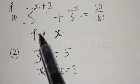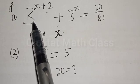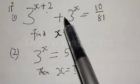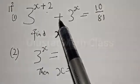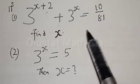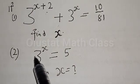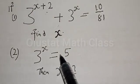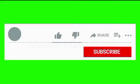Hi everyone, welcome to my class. In today's class we want to look at how we can quickly find the value of x from two given exponential equations. Number one: if 3 raised to power x+2 plus 3 raised to power x is equal to 10 divided by 81, find the value of x. Number two: if 3 raised to power x is equal to 5, find the value of x. But before we proceed, please don't forget to like, share, comment and subscribe.